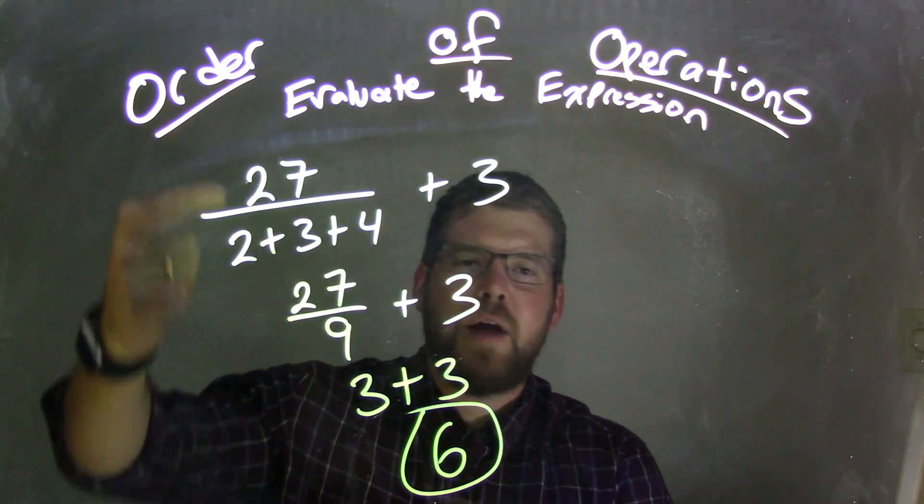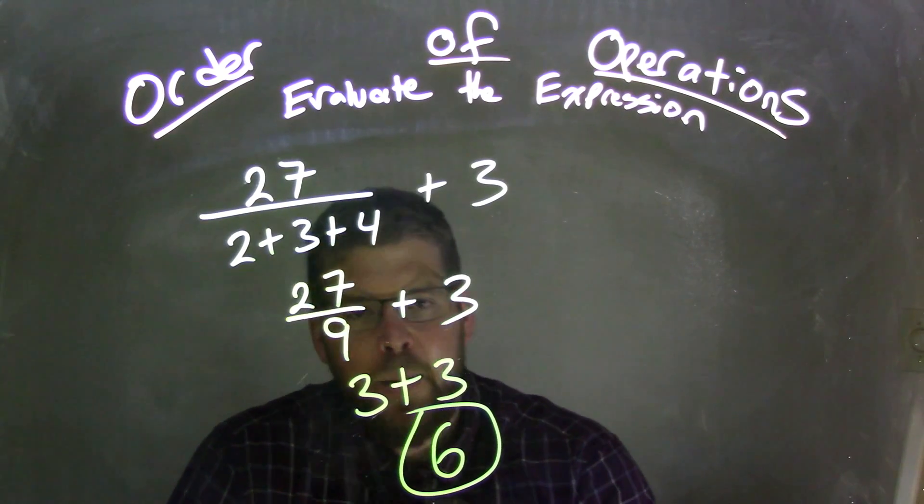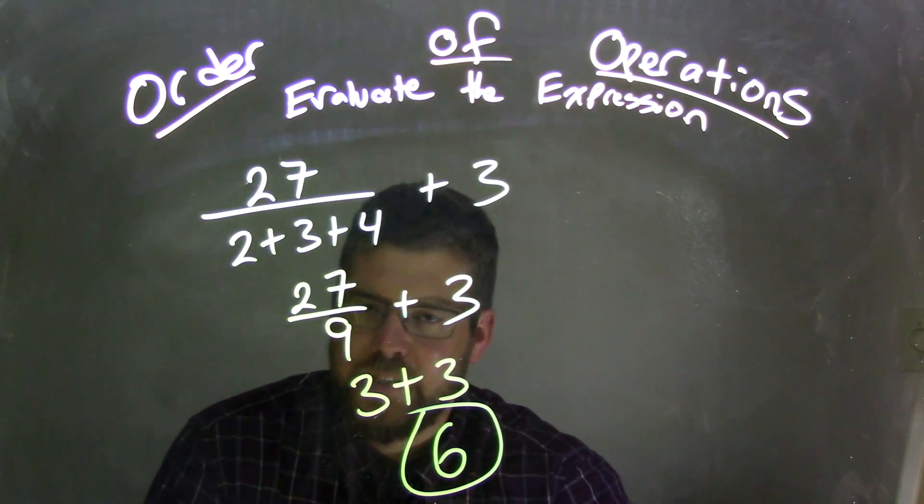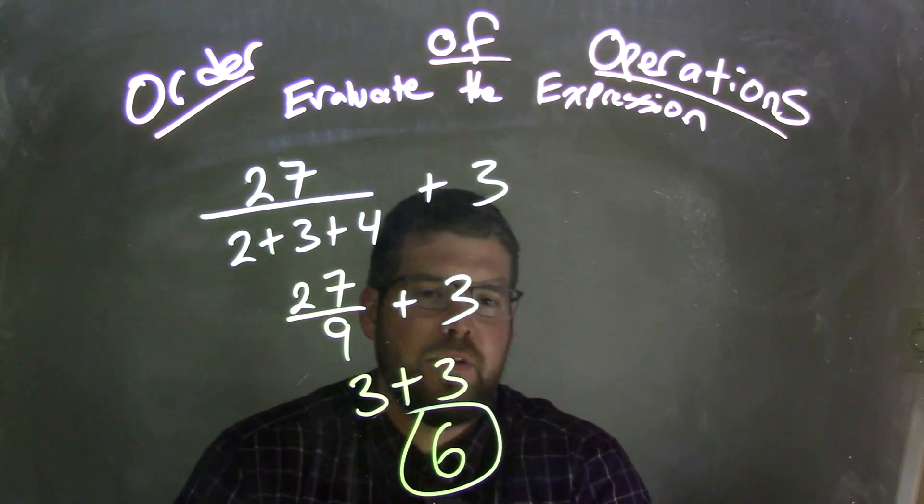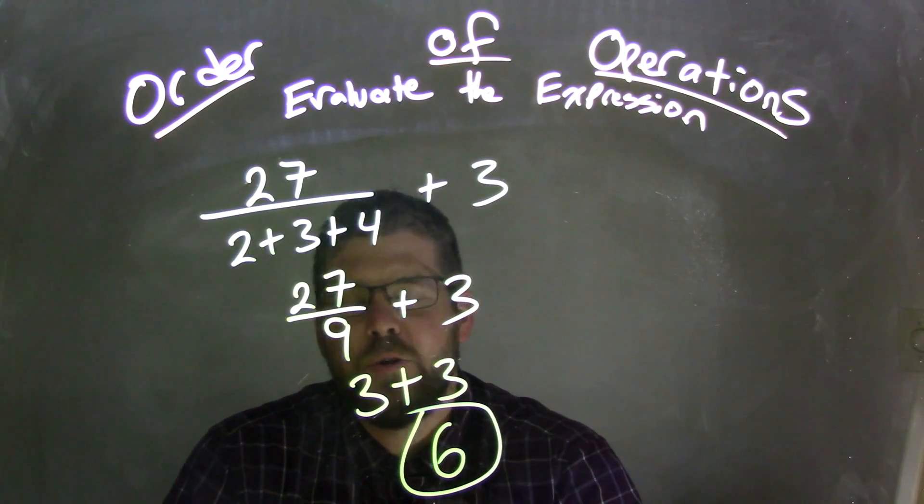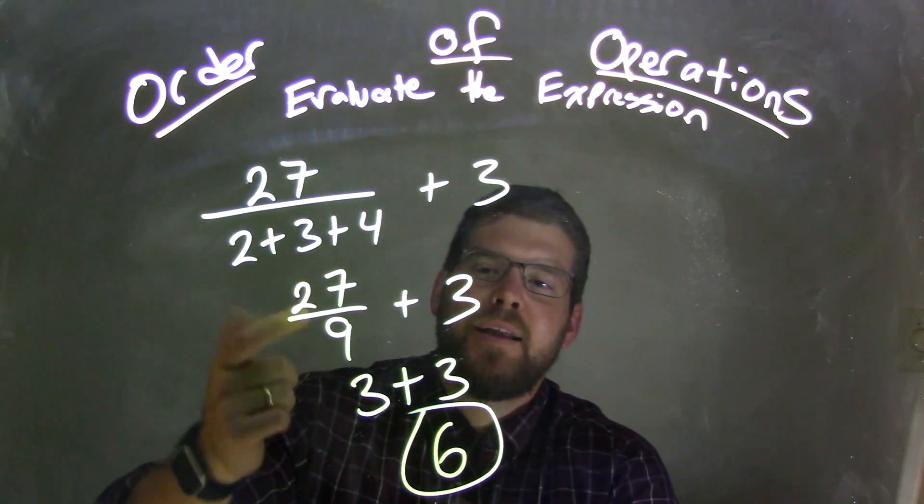So again, we've dealt with this fraction. We have to simplify the numerator and the denominator. Numerator was already simplified, and simple as it is 27. But 2 plus 3 plus 4, we can add together. 2 plus 3 is 5, plus 4 is 9. 27 divided by 9 is that 3. We add a 3 and get 6.